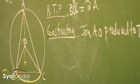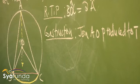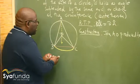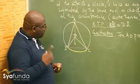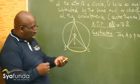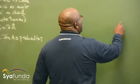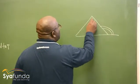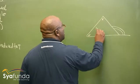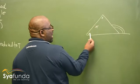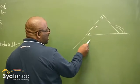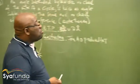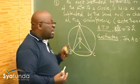In our Grade 10, when doing triangles, we learned that the exterior angle of a triangle is equal to the sum of the interior opposite angles. So this angle is equal to that angle plus this angle — if you extend it, the exterior equals the sum of the two opposite interior angles. That theorem becomes vital here.